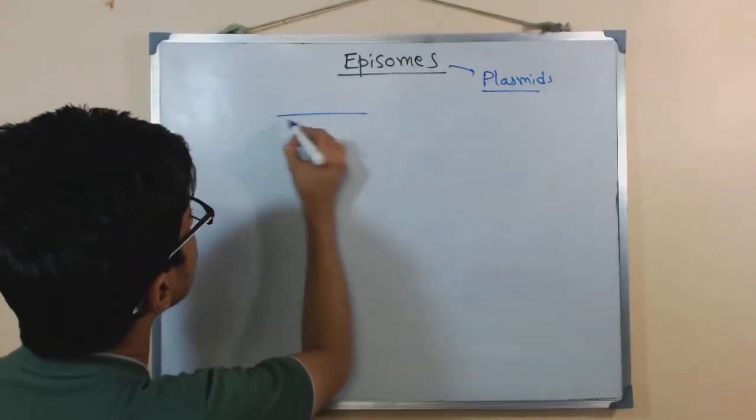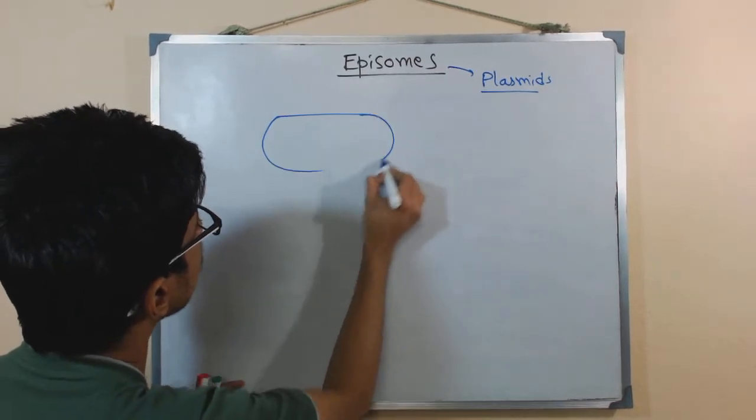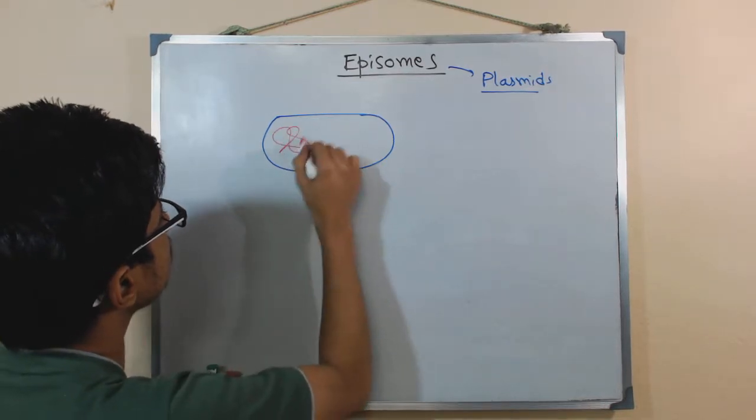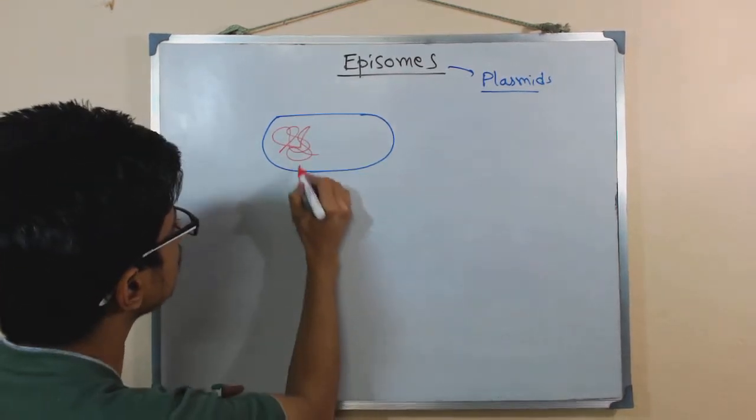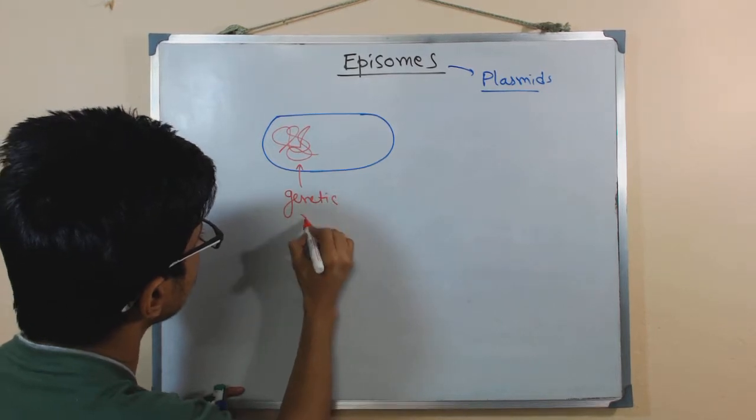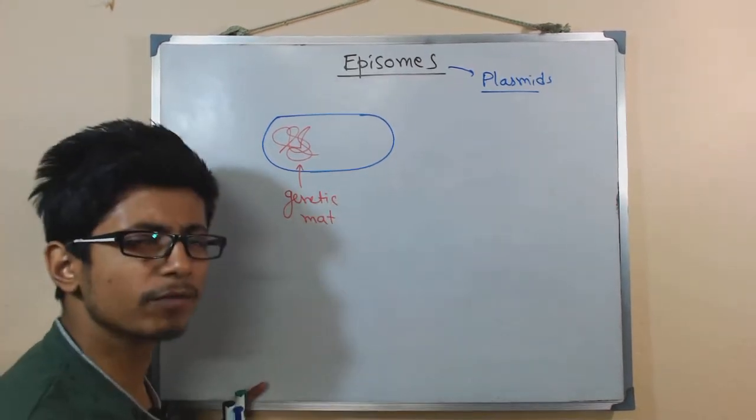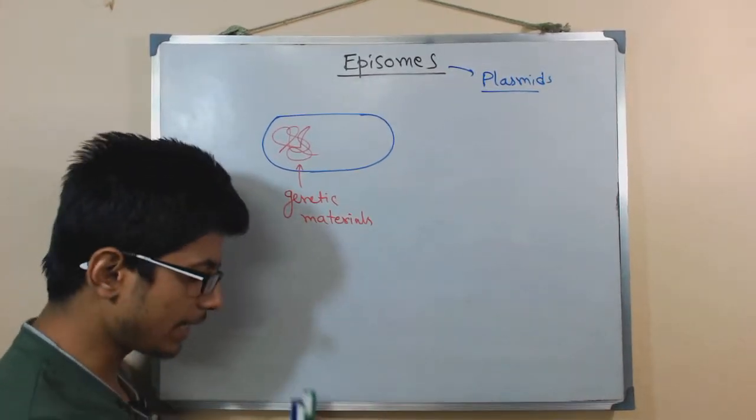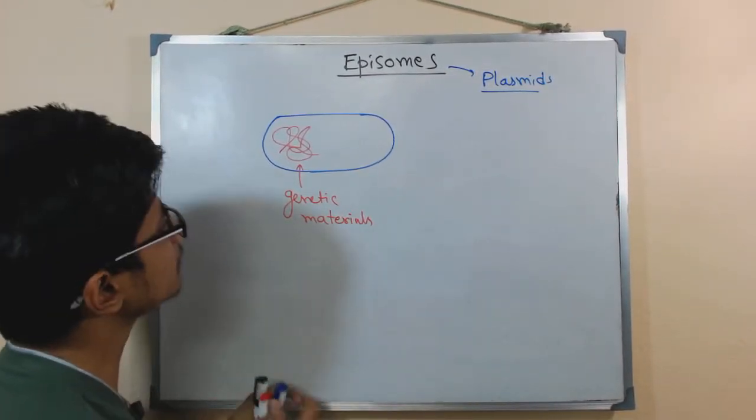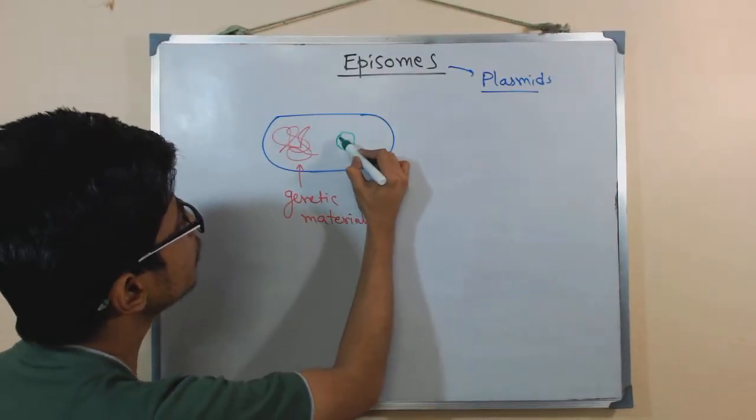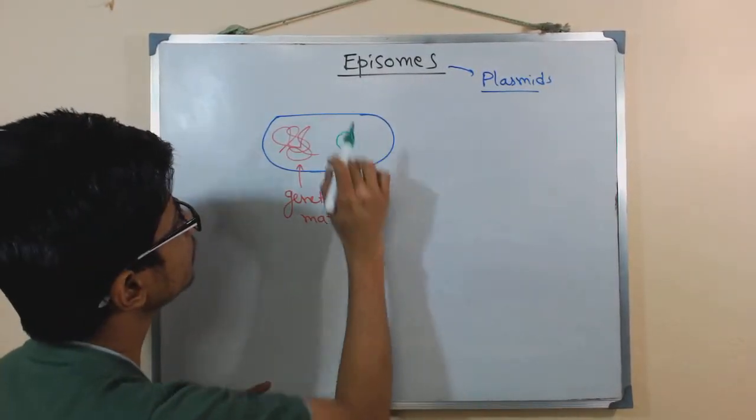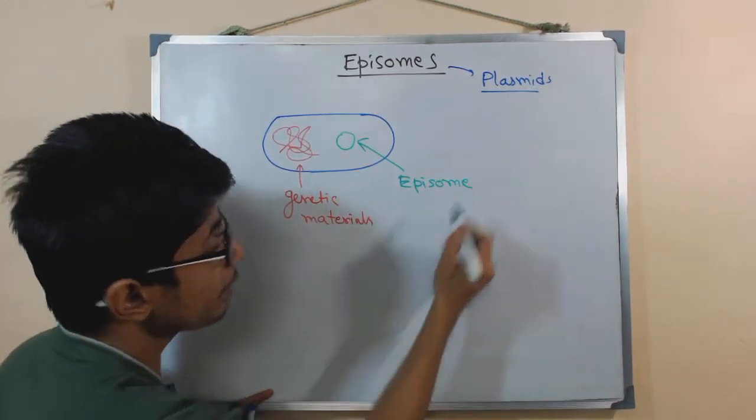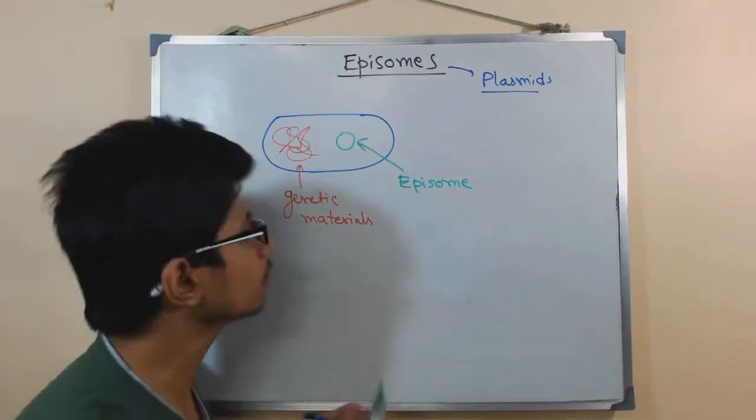What we have here is we have our cells, bacterial cells for example. In the cells, we are having the genetic material inside. Let's say this red thing is the genetic material. This is the genetic material because bacteria do not have all those nucleus and all these things. This is the genetic material and beside that we have some amount of circular DNA.